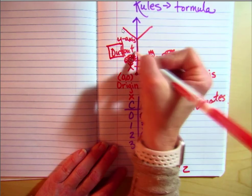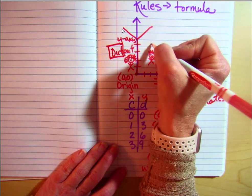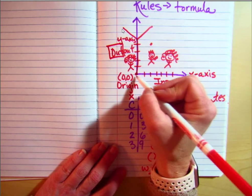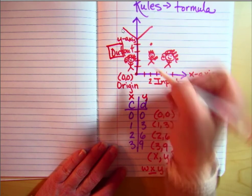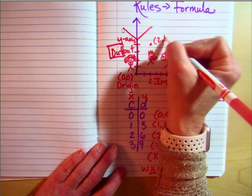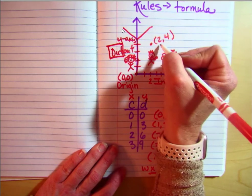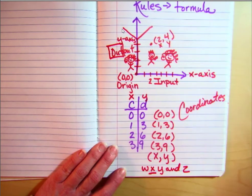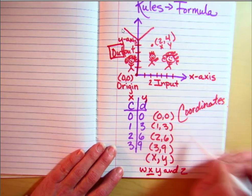So if on this graph here, I had a dot right here, I'm over 2 and up 1, 2, 3, 4, I'm going to plot the coordinate as 2, 4, because x is always before y. So your coordinates help you plot.